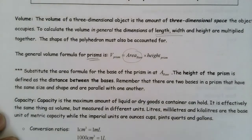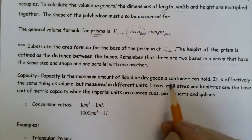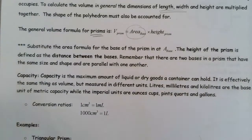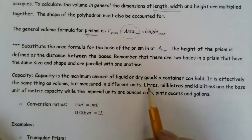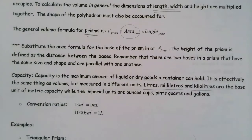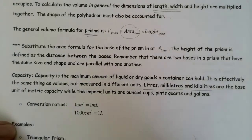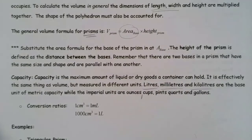Capacity is the amount of liquid or dry goods that a container can hold. It's related to volume — effectively the same thing — but measured in different units. Typically we talk about liters, milliliters, or kiloliters for capacity, whereas with volume you're talking about linear units cubed. In the imperial system, we talk about ounces, cups, pints, quarts, gallons, and so on.